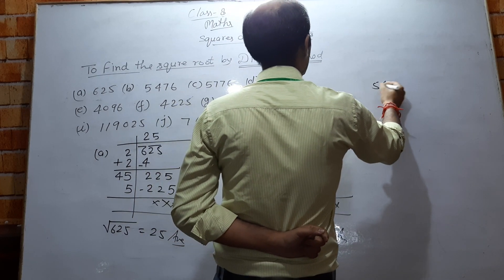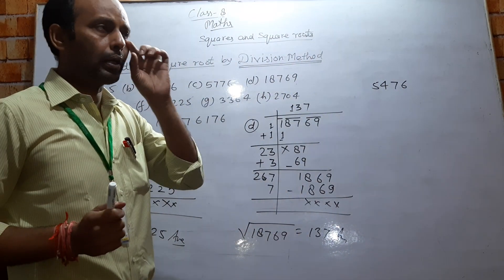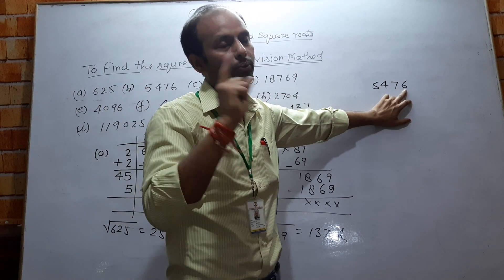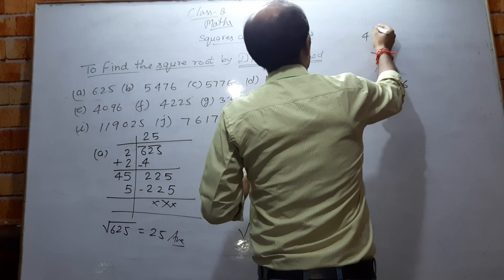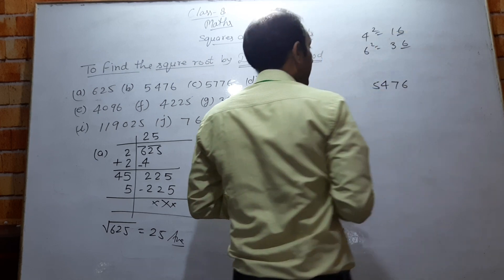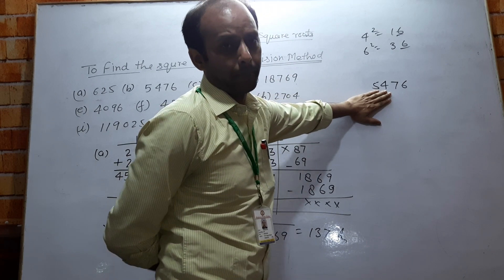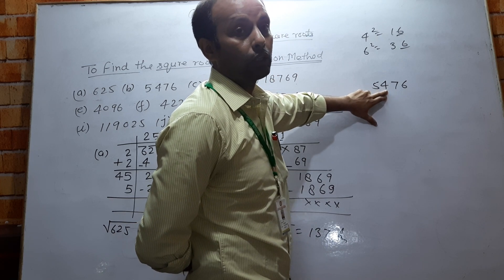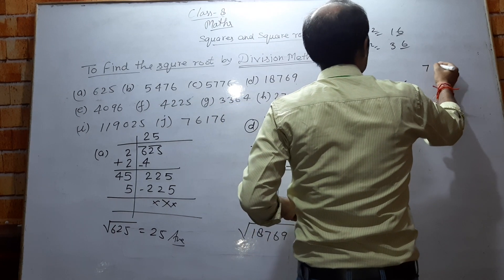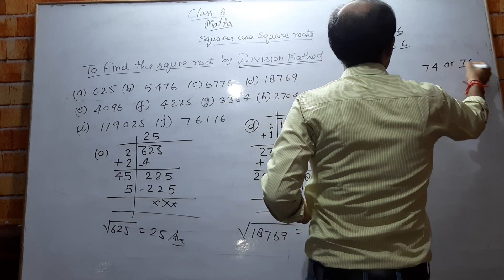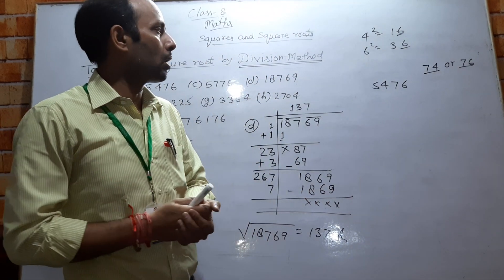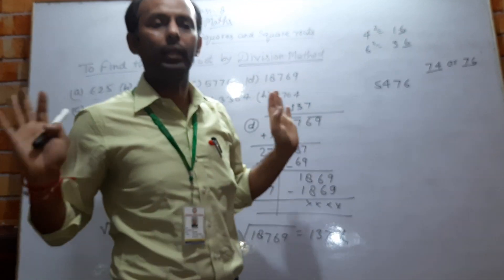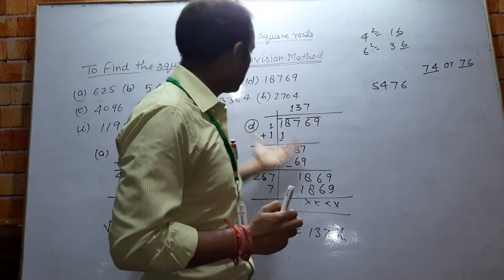As an example, take the number 54756. We previously told you that the unit digit of any square will be 6 only when the unit digit of the number is either 6 or 4, because 4 squared is 16 and 6 squared is 36. The first pair here is 54, so choose a number whose square is less than or equal to 54. So the square root is either 74 or 76. This way we can solve objective questions quickly using this trick.